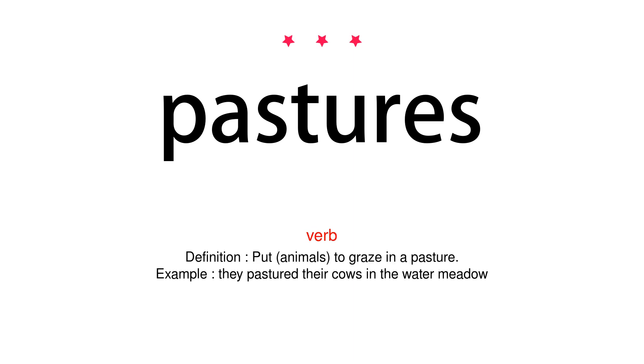Verb. Definition: Put animals to graze in a pasture. Example: They pastured their cows in the water meadow.